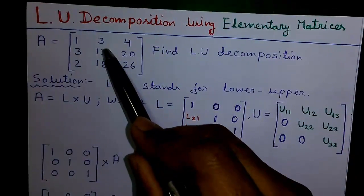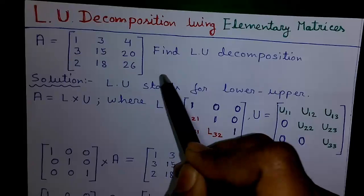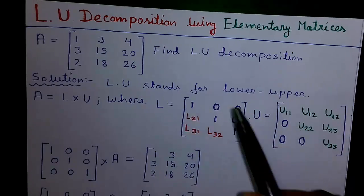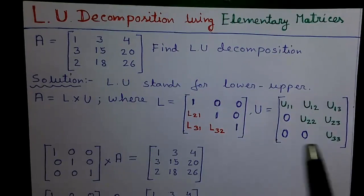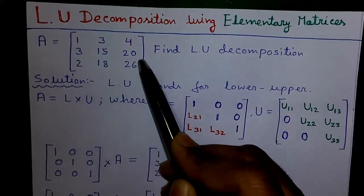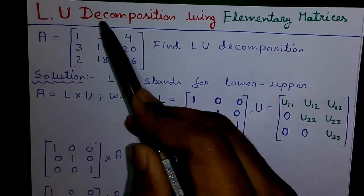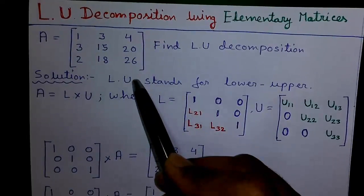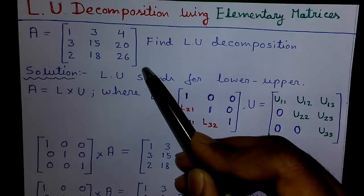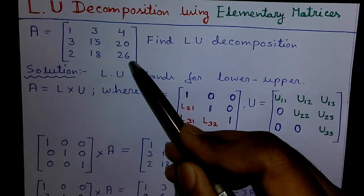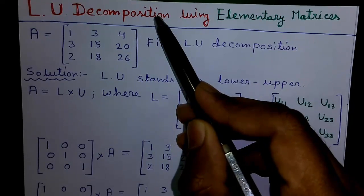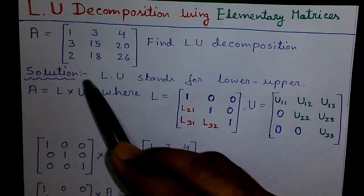This is our square matrix A with three rows and three columns. Remember, to find the LU decomposition, the matrix must be a square matrix. The rows are called R1, R2, and R3, and the columns are called C1, C2, and C3. The main diagonal is called the Principal Diagonal — generally we consider the left diagonal or Principal Diagonal. So let's proceed to the solution.